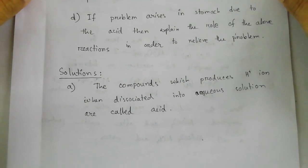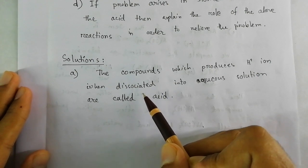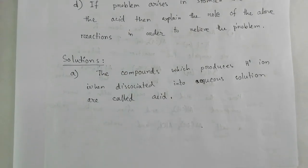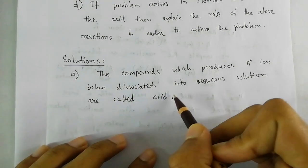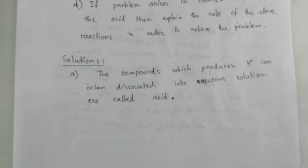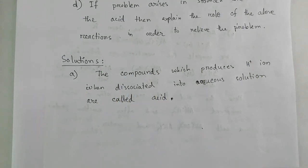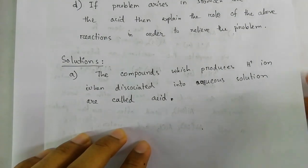For question A, we need the definition of acid. Any appropriate definition from your textbook or an authentic source is acceptable. The compounds which produce hydrogen ions (H⁺) when dissociated in aqueous solution are called acids. So in aqueous solution they must produce H⁺ ions to be called acids.